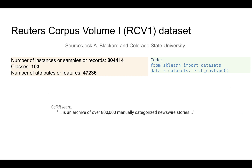The RCV1 dataset — Reuters Corpus Volume One — is a large dataset with around 800,000 records, 103 classes, and 47,000 features. The dataset contains about 800,000 news stories that can be used for text classification.